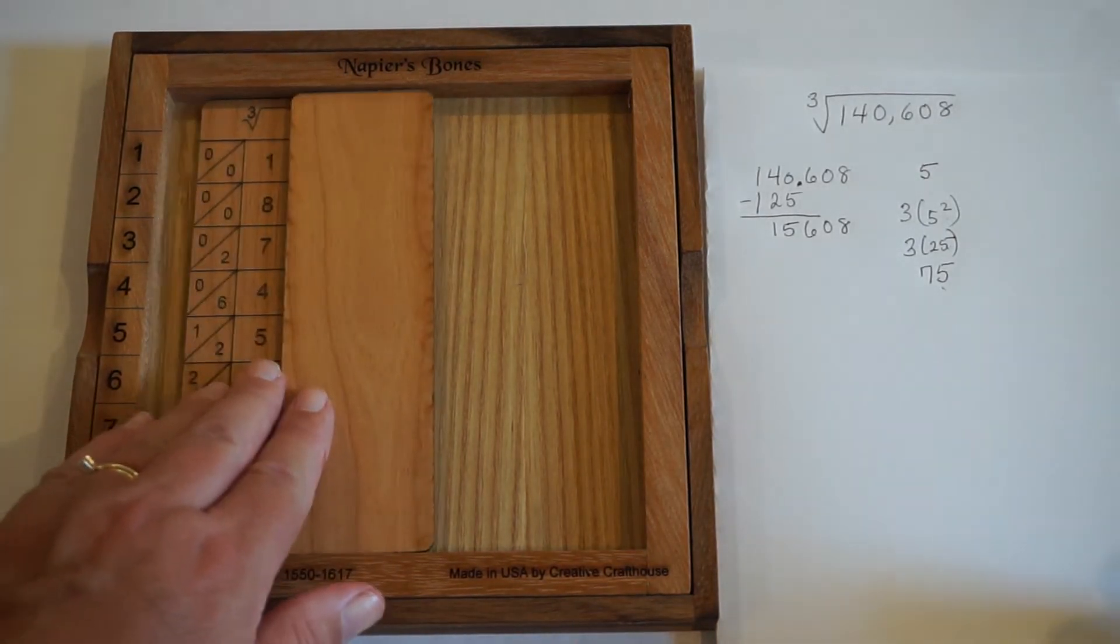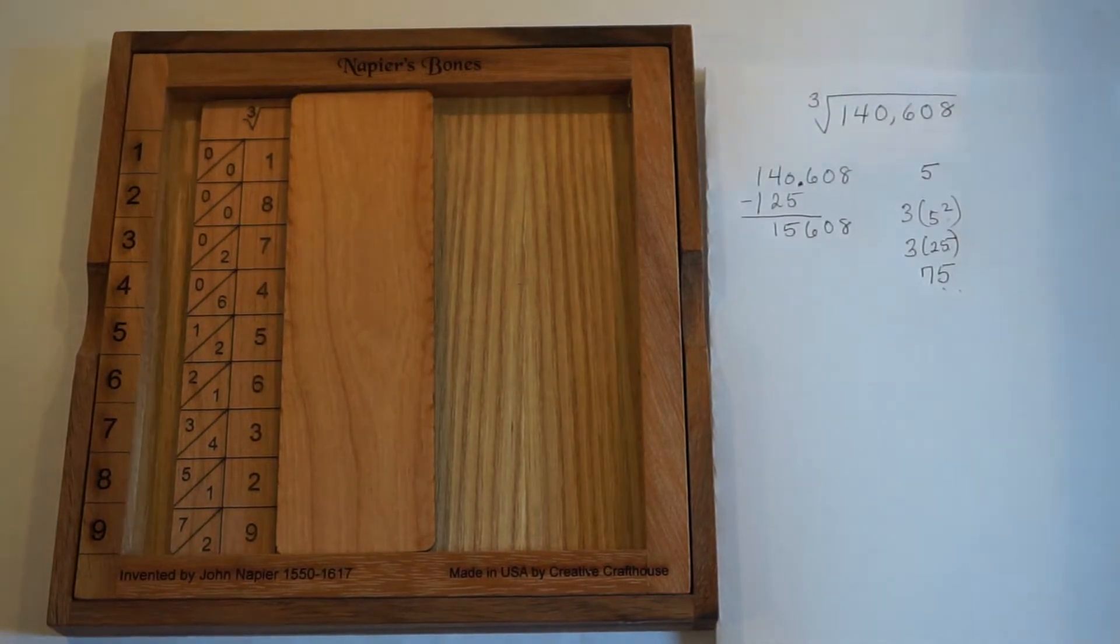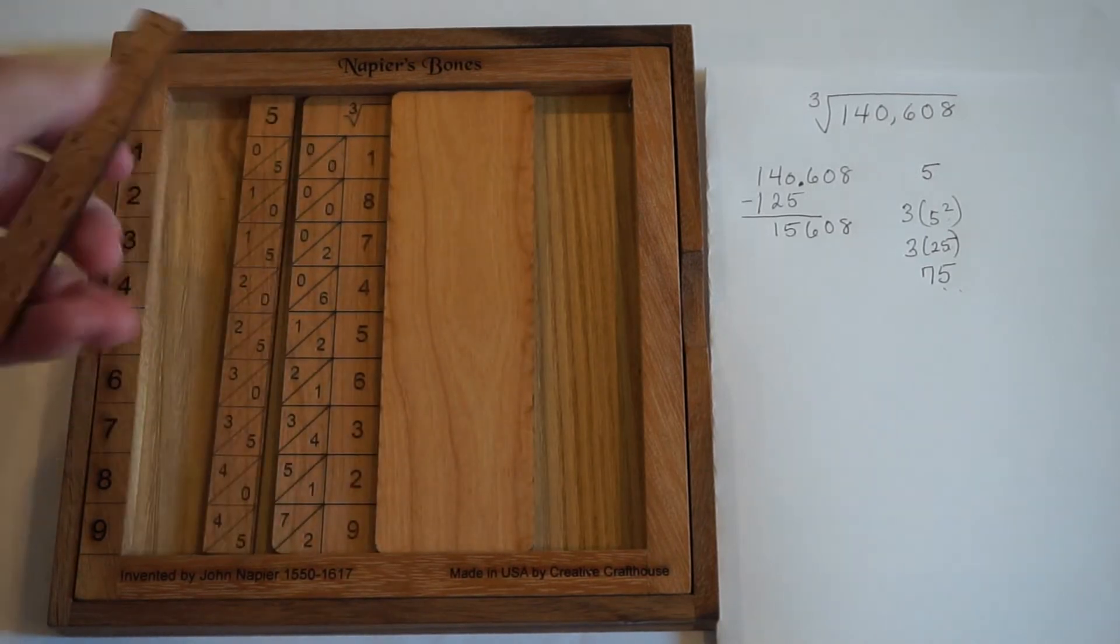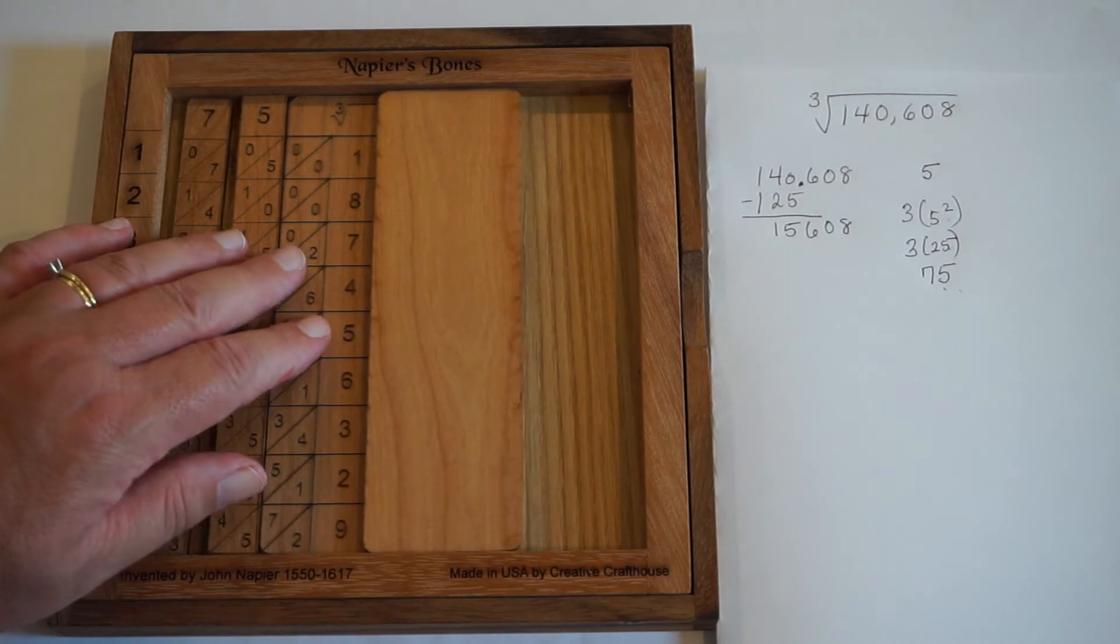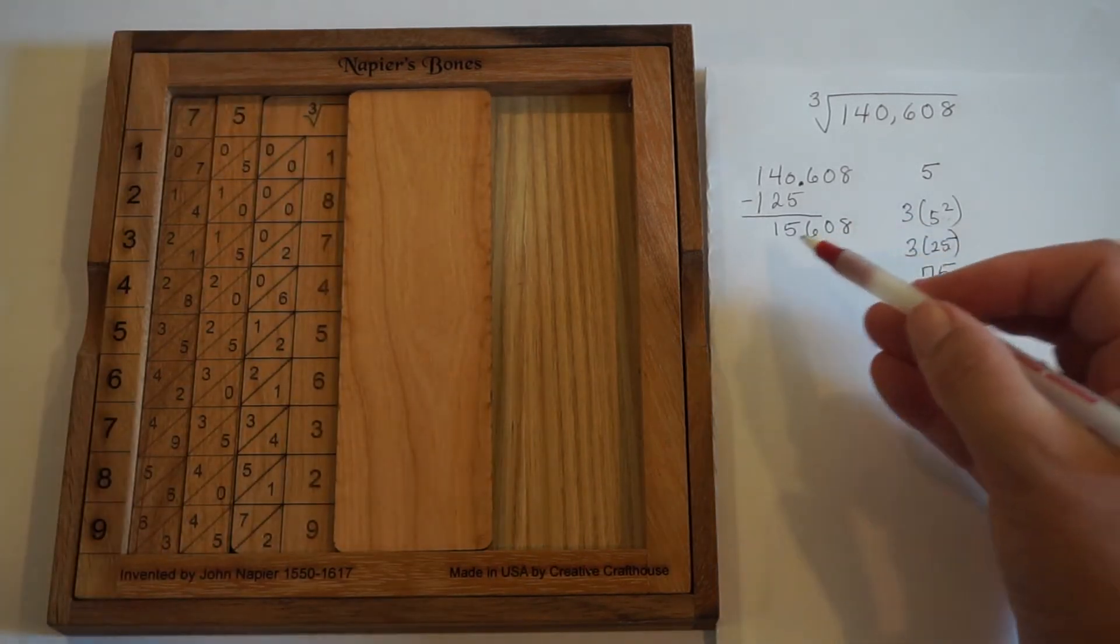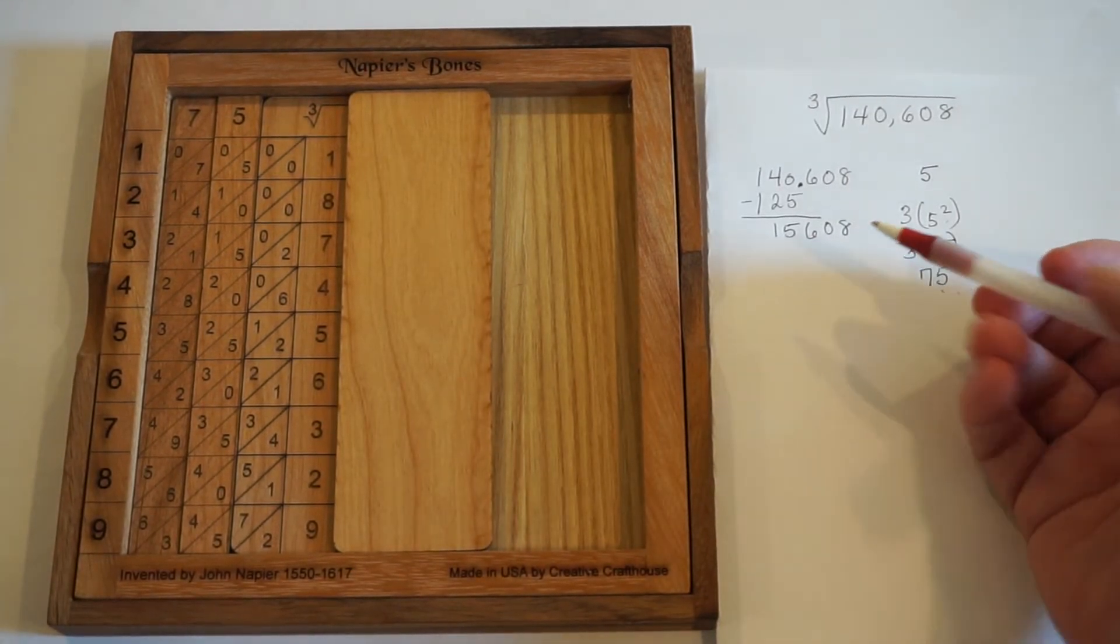So that said, this 75 tells us what it is that we're going to be putting in front of the cube root rod. So I'm going to slip in here a 75 right in front of that cube root rod. And what we're looking for now is a number that's close to 15,608 without going over.